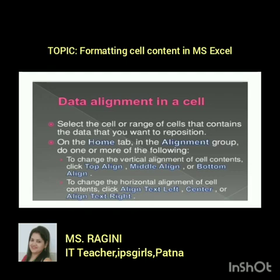For data alignment in a cell, select the cell or range of cells that contains the data you want to reposition. On the Home tab, in the Alignment group, you can change the vertical alignment by clicking Top Alignment, Middle Alignment, or Bottom Alignment. To change horizontal alignment, click Align Text Left, Center, or Align Text Right.